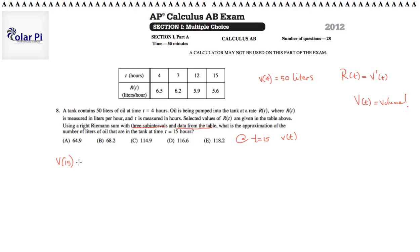How do we get to v of 15? Well, one thought is that we know v of 15 minus v of 4 must be the integral from 4 to 15 of r of t. That is, well, if you want, this to be v of, then you must have v prime of t in here.